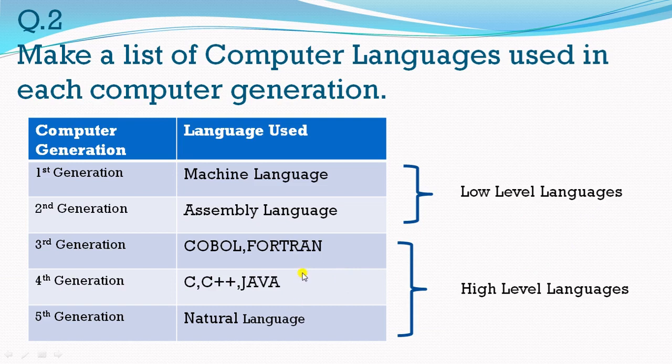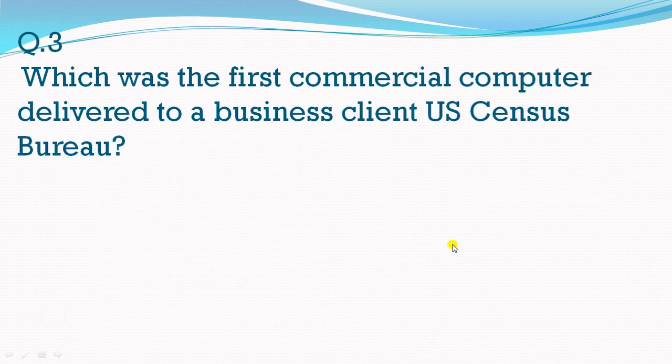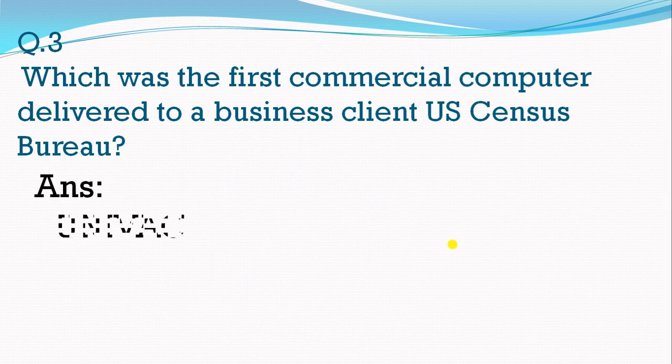These are the examples of high level languages. Now, which was the first commercial computer delivered to a business client, the US Census Bureau? That was UNIVAC.